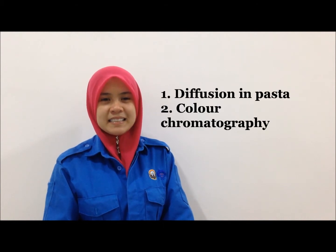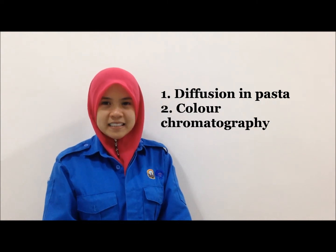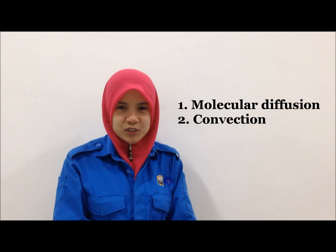Do you know how does diffusion happen? It happens by the ordinary molecule due to the concentration difference. At this session, we will show you two experiments involving mass transfer, which is diffusion in pasta and color chromatography. The mass transfer rate is proportional to the area and normal to the direction of the mass transfer, so the rate is expressed as a flux. Mass transfer stops when the concentration is uniform. The mechanism of mass transfer involves both molecular diffusion and convection.